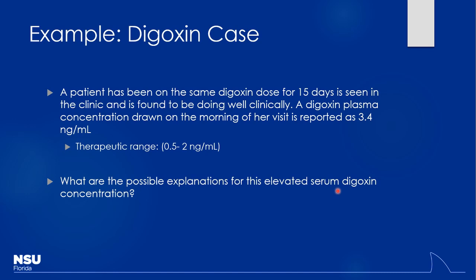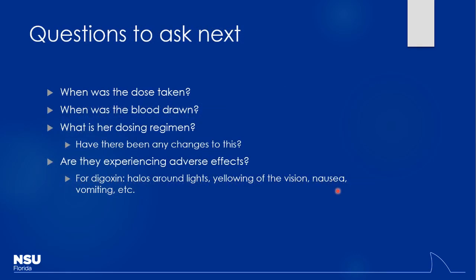Maybe they took an extra dose. As elderly patients age, cognition and memory decline, so it's very common to get people who accidentally take double doses — we get those calls at the poison center all the time. Maybe something is influencing the absorption — eating something that increases absorption. Just like a patient comes in with belly pain and you work through a differential, here you come up with a differential for why that level might be high. Questions to ask: when was the dose taken, when was the blood drawn in relation to that, what's the dosing regimen, have there been any changes?